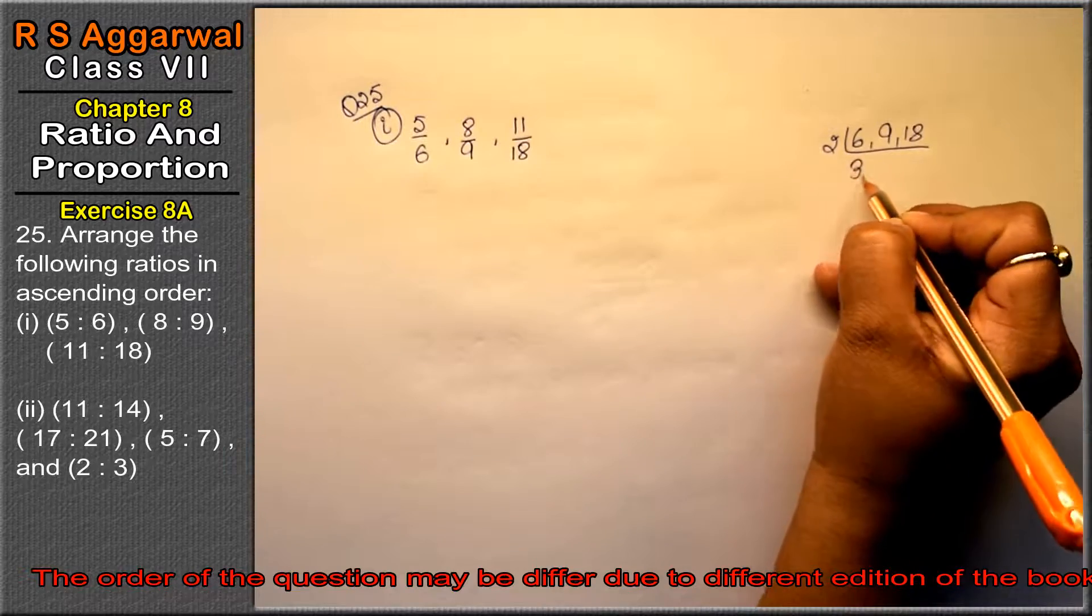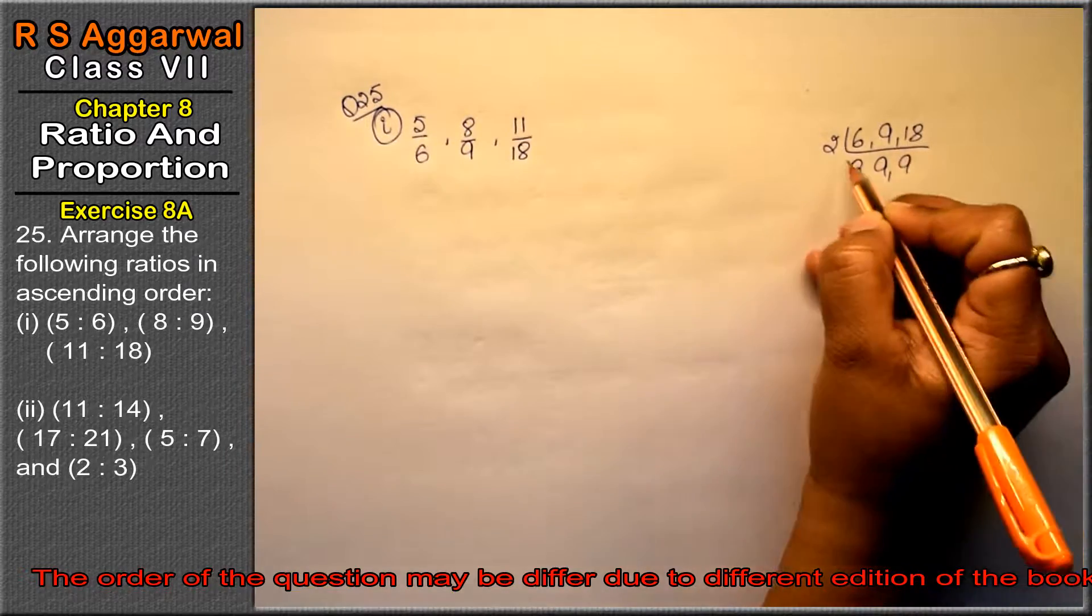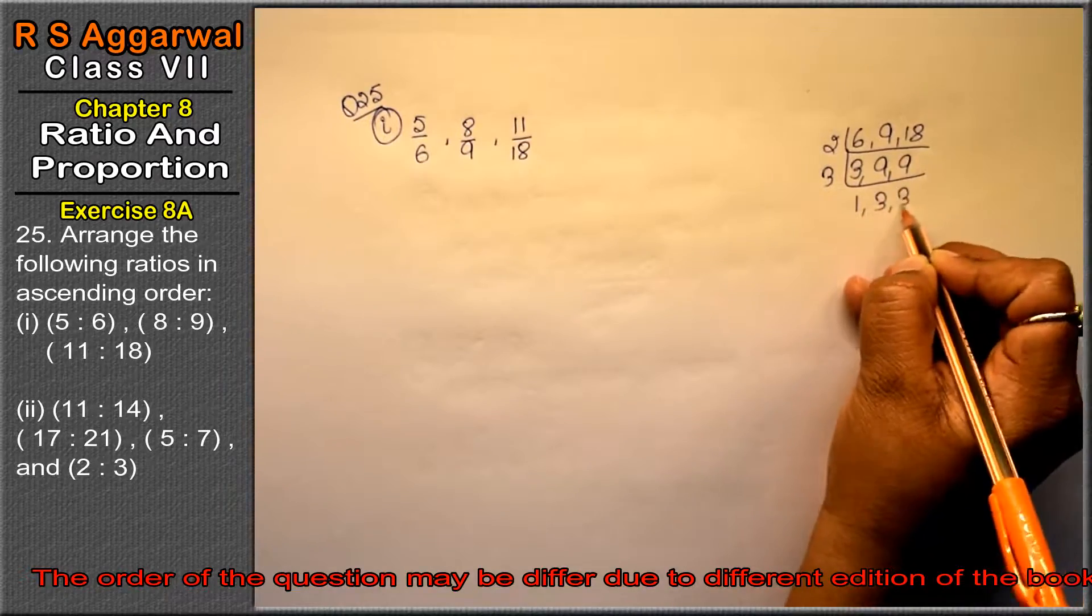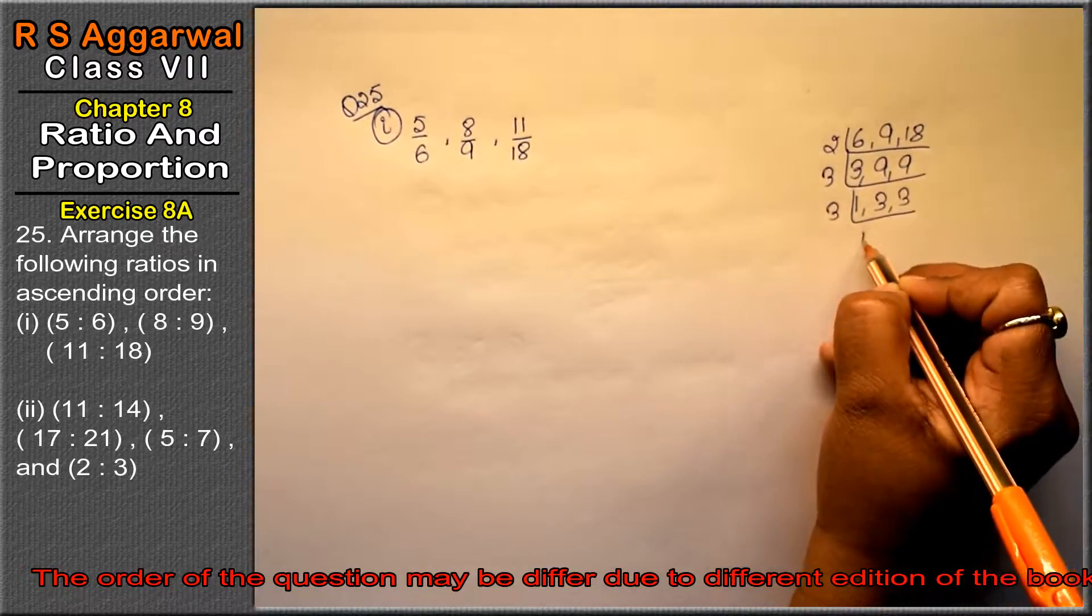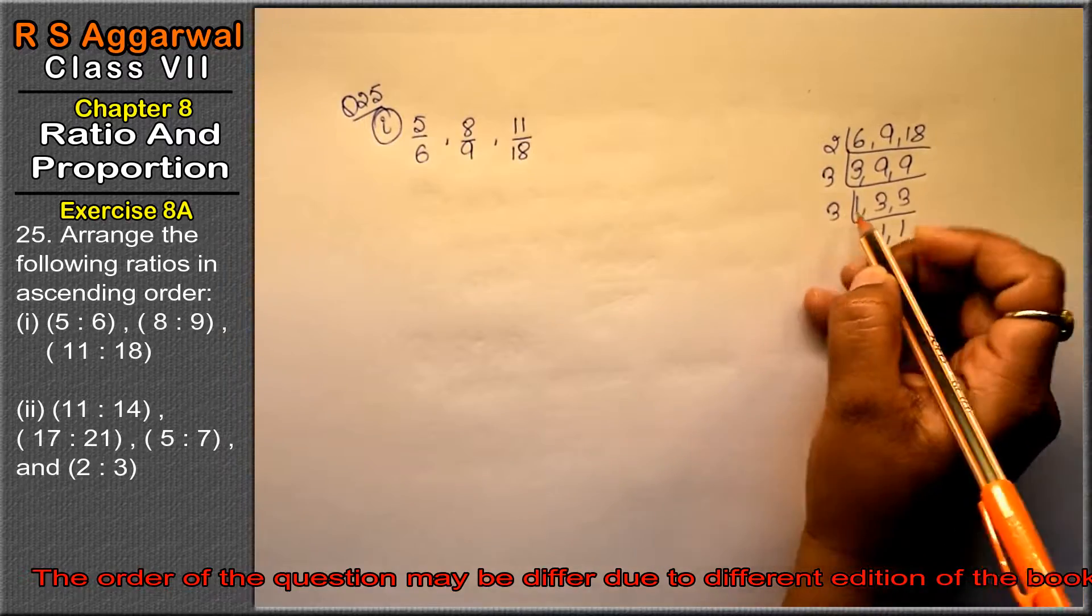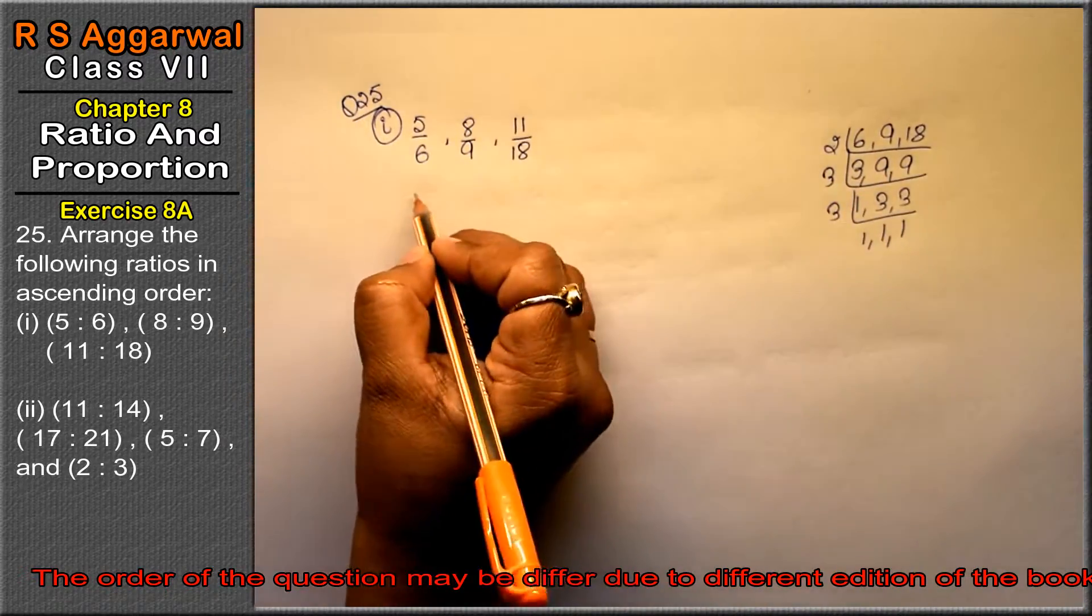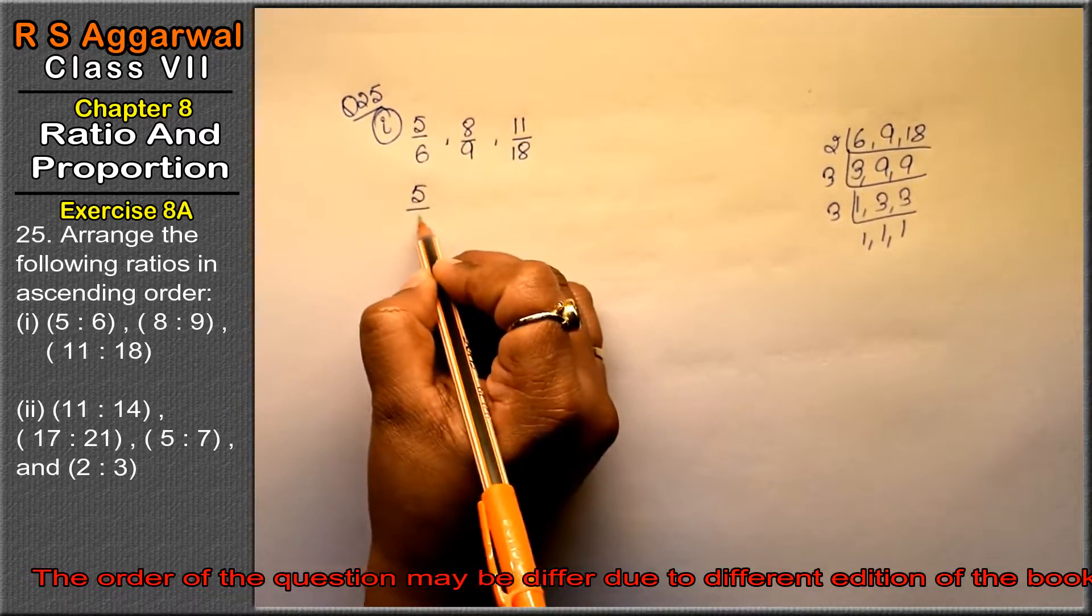2 into 3 is 6, 9 as it is, 2 into 9 is 18. Then 3 into 3 is 9, and 3 into 3 is 9 again. 2 into 3 is 6, 6 into 3 is 18. That means we have each denominator as 18.